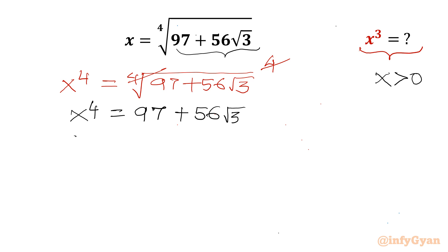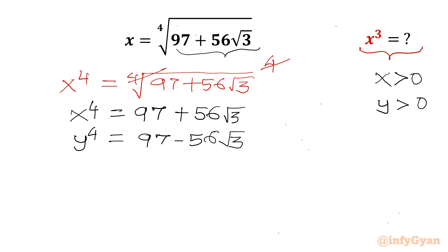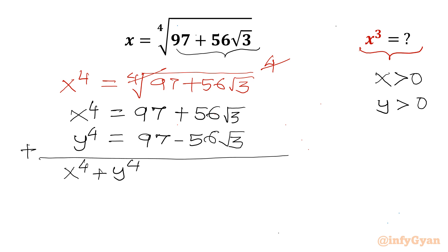Now I will consider y power 4 also, which is 97 minus 56 root 3. Checking this value, y is also positive. Adding both equations: x power 4 plus y power 4 equals 97 plus 97, so 194.